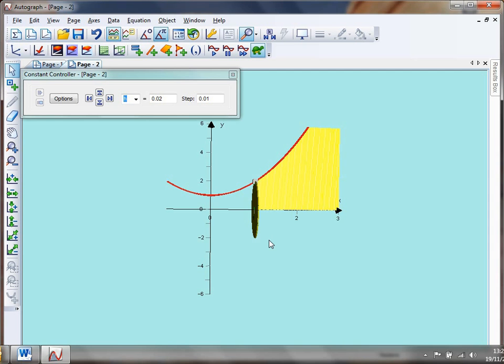So what we actually end up with is our original area or volume that we're trying to find is just made up of millions and millions of these little cylinders, all with the volume pi y squared, pi r squared, pi y squared, times by this little dx thing.